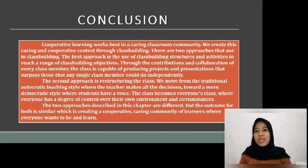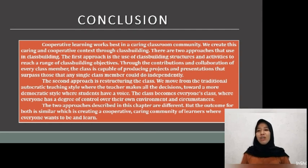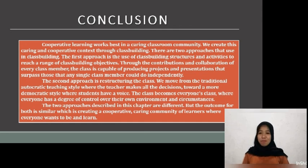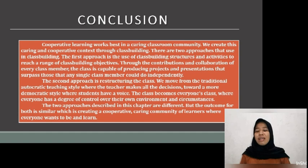Cooperative learning works best in a caring classroom community. We create this caring and cooperative context through class building. There are two approaches used in class building. The first approach is the use of class building structures and activities to reach a range of class building objectives through the contribution and collaboration of every class member. The class is capable of producing projects and presentations that surpass those any single class member could do independently. The second approach is restructuring the class — moving from the traditional autocratic teaching style where the teacher makes all the decisions toward a more democratic style where students have a voice. The class becomes everyone's class where everyone has a degree of control over their own environment and circumstances. The two approaches are different, but the outcome for both is the same: creating a cooperative, caring community of learners where everyone wants to be and learn.